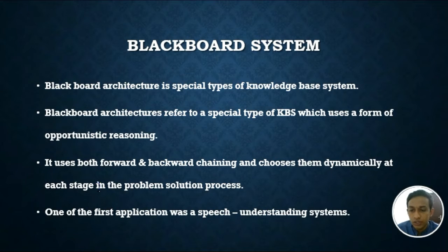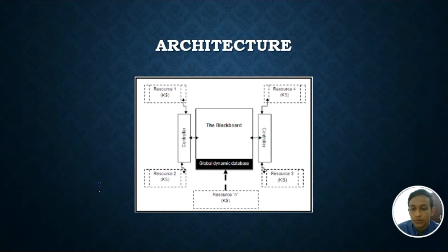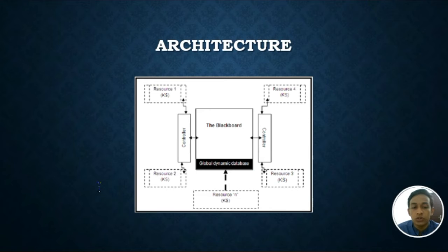Next we can see the architecture of the blackboard system — how it works and how it performs tasks. A blackboard system can be viewed as a group of human specialists standing next to a large blackboard. They are working cooperatively in order to solve the problem, using the blackboard as a workplace for solution development. Problem solving begins with the announcement of a problem and writing initial data onto the blackboard.